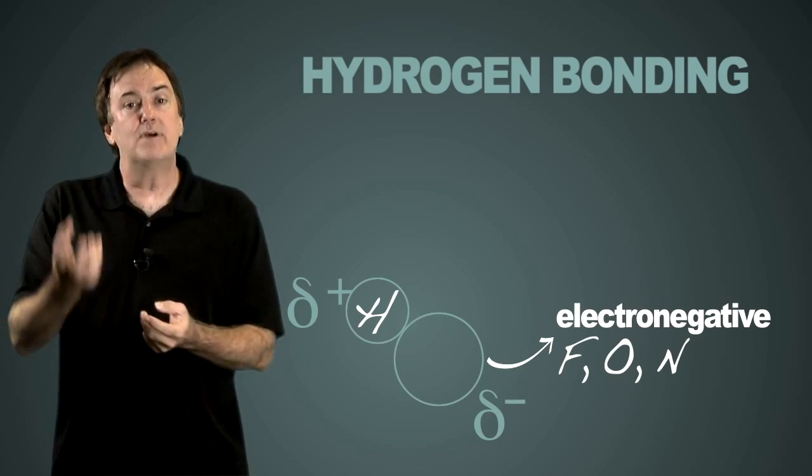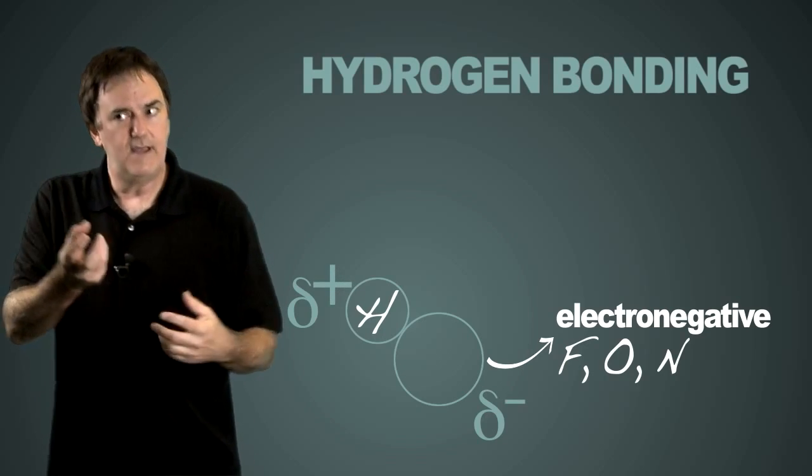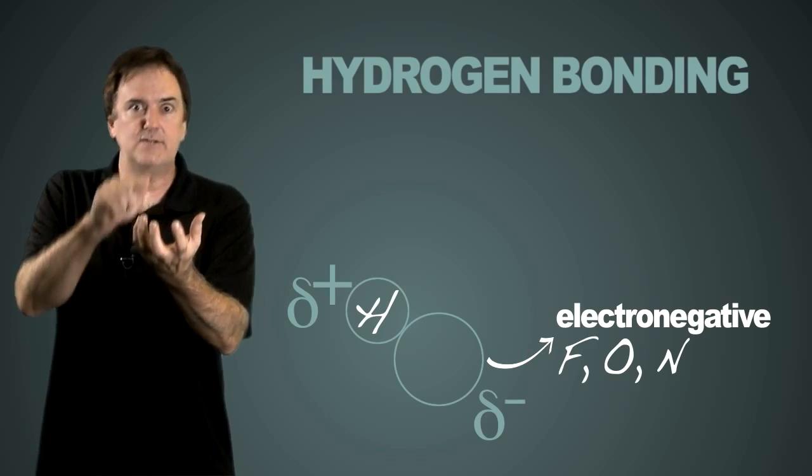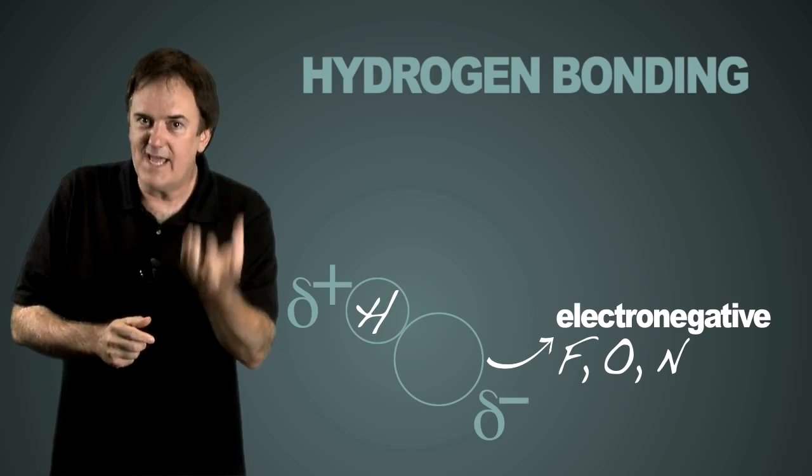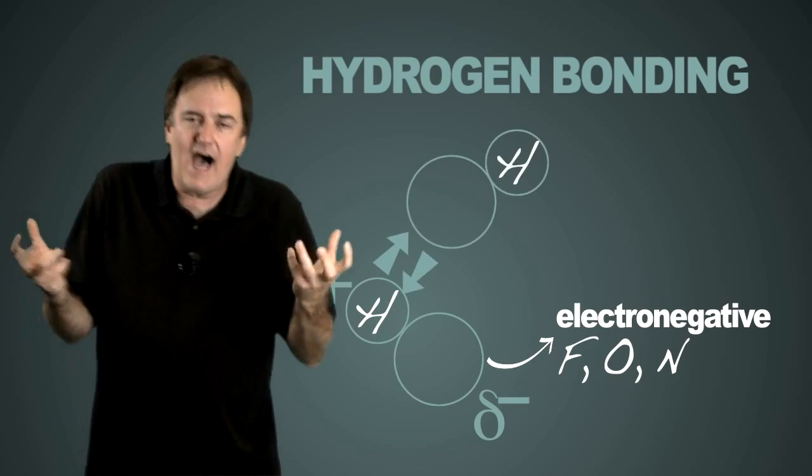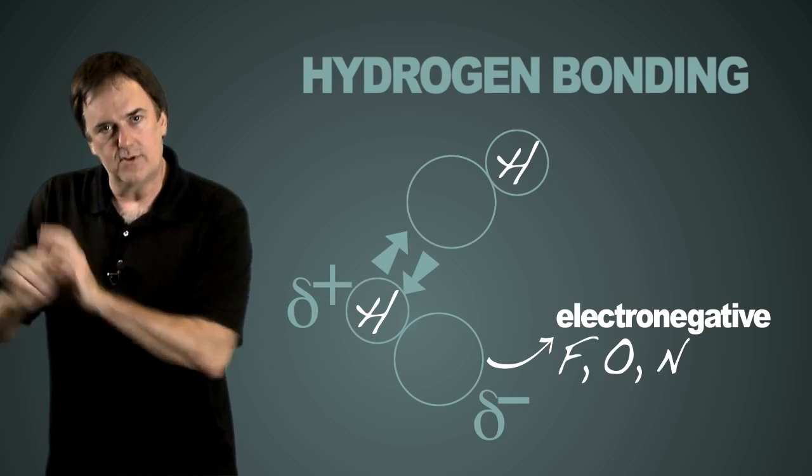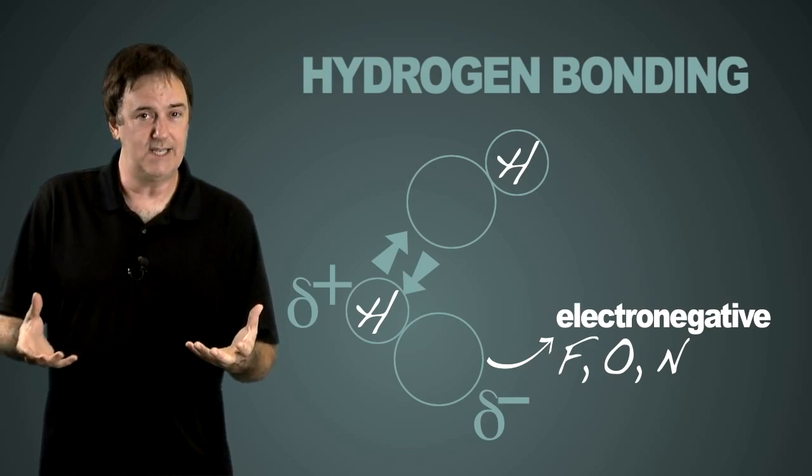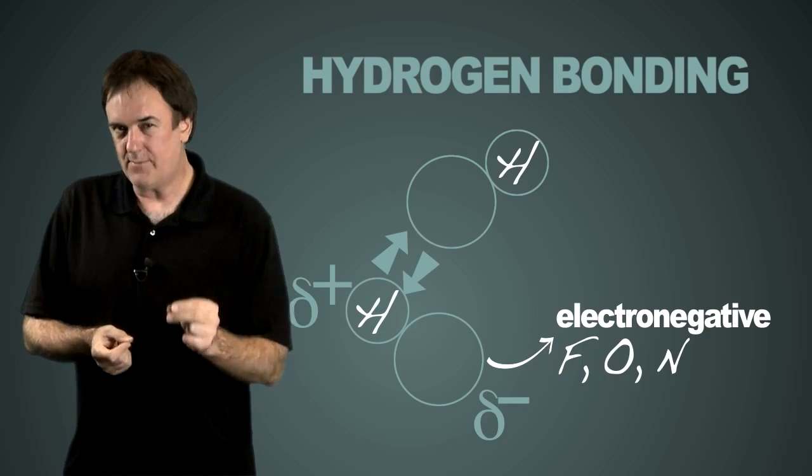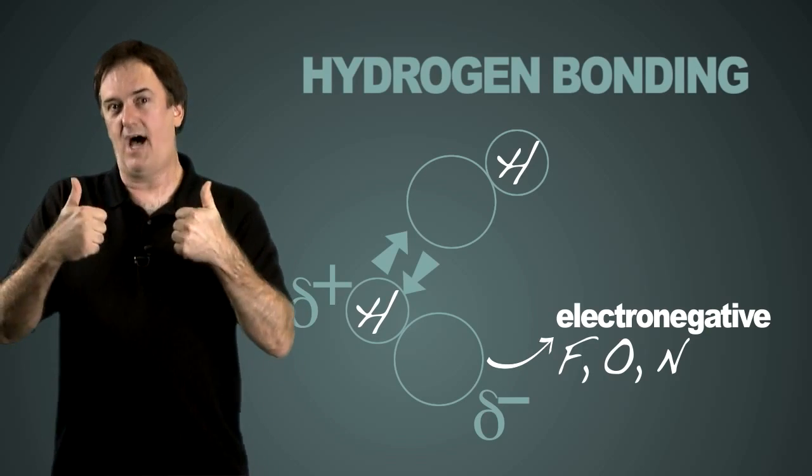And when it is, it becomes so partial positive, and the oxygen or nitrogen or fluorine becomes so partial negative, that you get an even higher amount of attraction. So we go ahead and classify that in its own class. We call it hydrogen bonding. But it's really just dipole-dipole interaction, just up a notch.